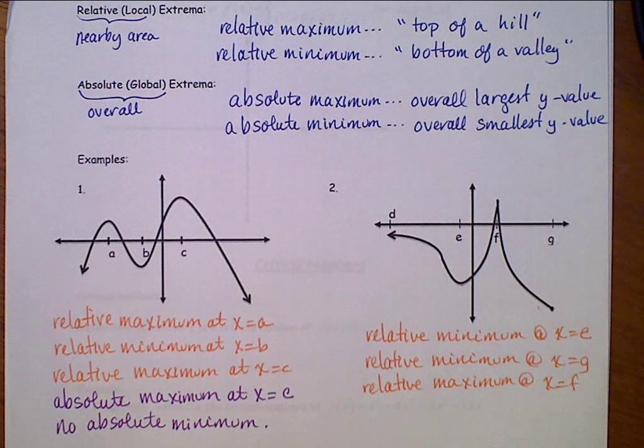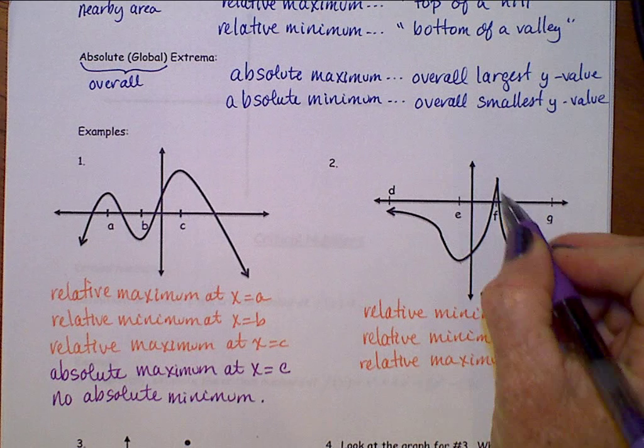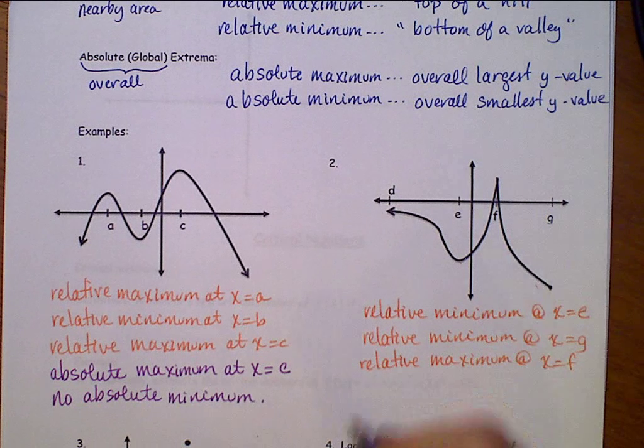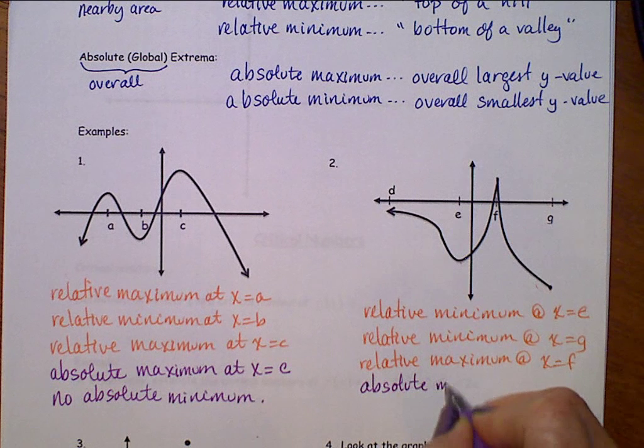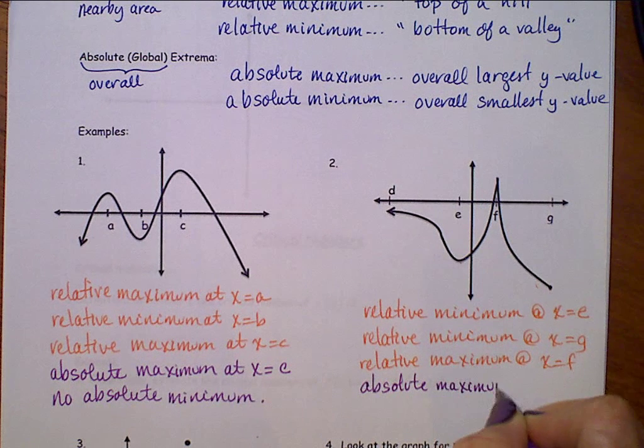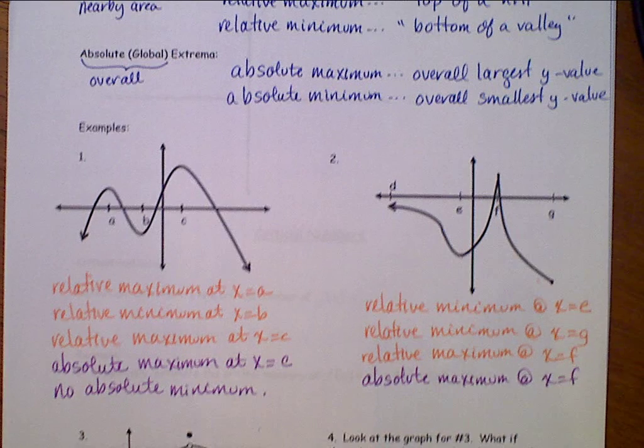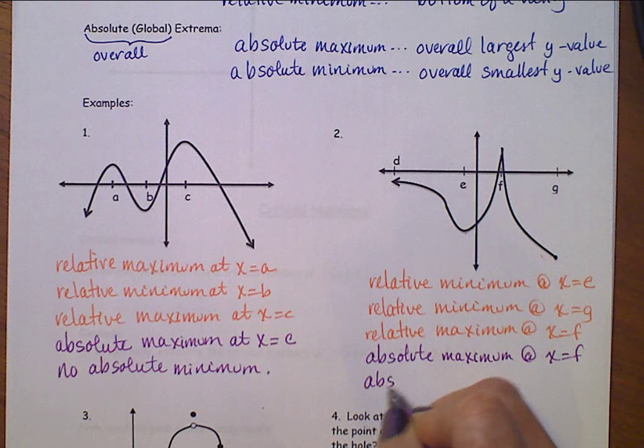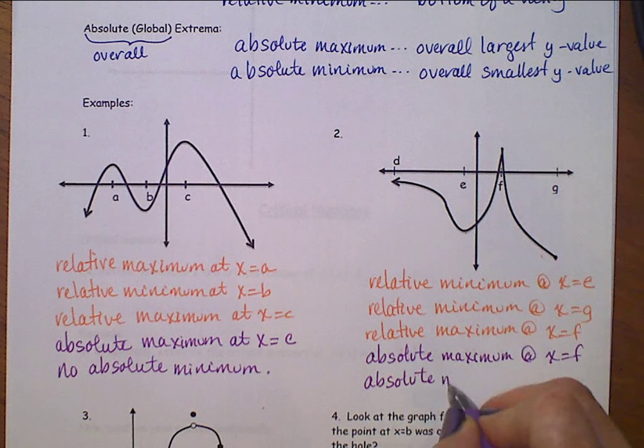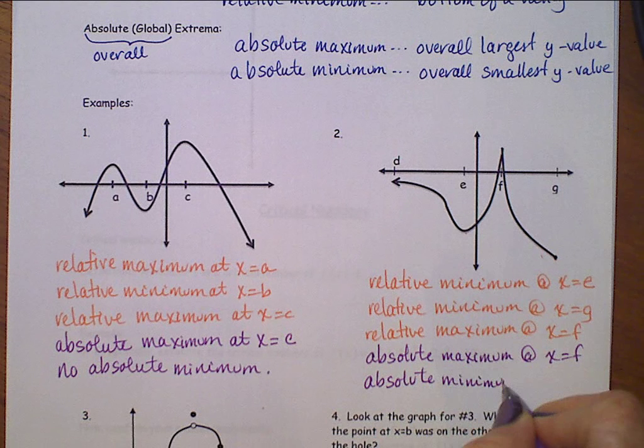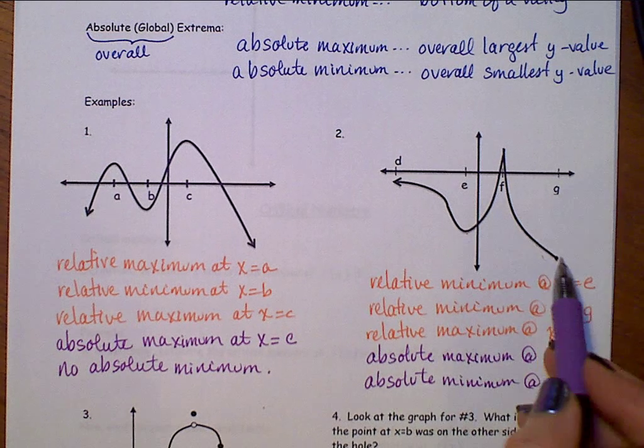Looking for our absolutes, the overall largest y-value occurs right here at f, so we do have an absolute maximum at x equals f and we will have an absolute minimum value at x equals g. That is the overall lowest y-value.